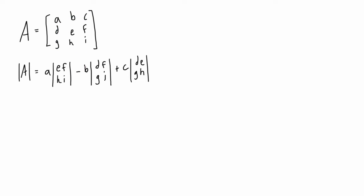For the next term, we have 'b', and if we cross out everything in line with it, we're left with d, f, g, i — and that's exactly the 2×2 matrix whose determinant we take. For the last term, element 'c': crossing out everything in line with c leaves sub-matrix d, e, g, h, and that's the 2×2 determinant we multiply by the value of c.